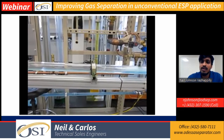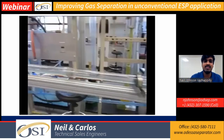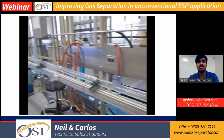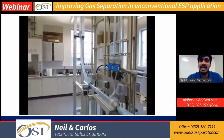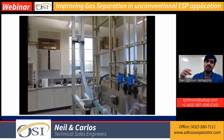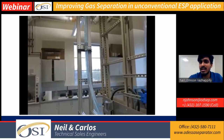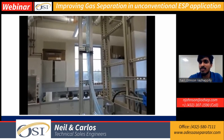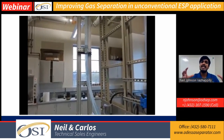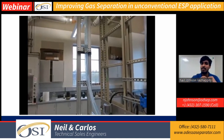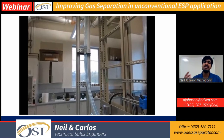As production moves in sections through the lateral and into the vertical section — going through the tangent area and right when it reaches the kickoff point — that's where the ESP lands. The ESP has to handle gas bubbles that break due to turbulence, and most of the gas slugs are still present.